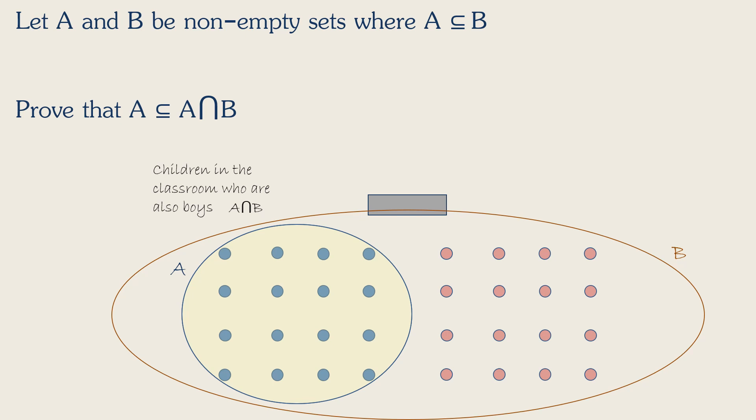So if A is equal to A intersection B, can it be also a subset of it? What does subset even really mean?